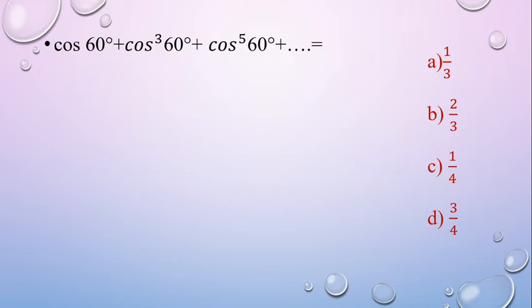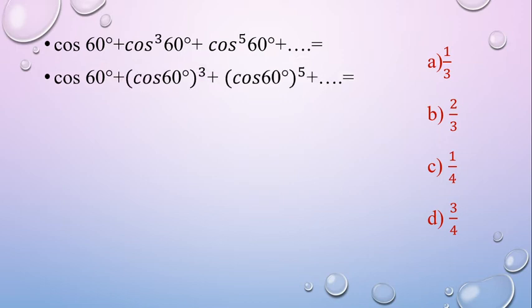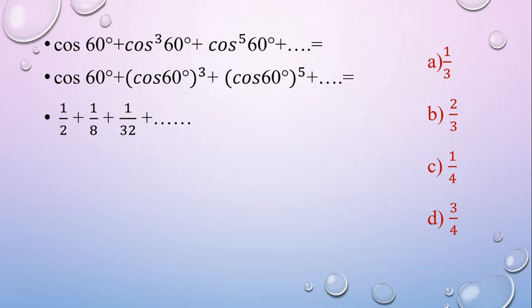This is cos cubed 60° and cos 60° raised to 3, and cos raised to 5 of 60° is cos 60° raised to 5. So, the first term is cos 60° plus cos 60° whole cube plus cos 60° raised to 5 plus etc. Now, the cos 60° value is 1/2. So, substituting: first term is 1/2, plus 1/2 whole cube which equals 1/8, plus 1/2 raised to 5 which equals 1/32.